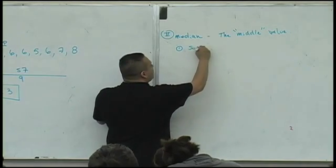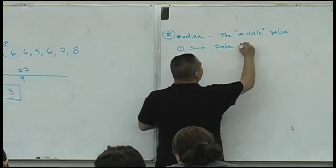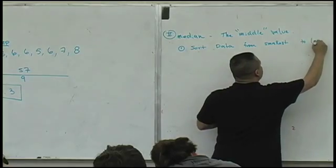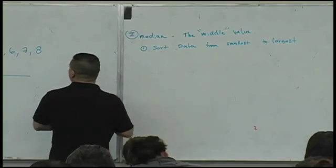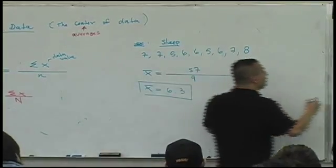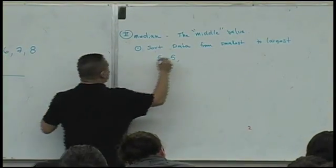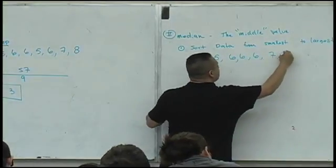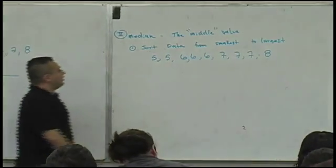What we mean by middle is this. You're going to go through this procedure. You're going to sort your data. What does it mean to sort data? Reorganize your data. You're going to sort your data from smallest to largest. So we're going to sort our data. Reorganize your data smallest to largest. What's the smallest data value? How many fives do we have? Two fives. And then you have three sixes. And then you have three sevens. And then you have one eight.